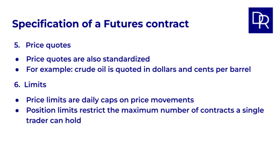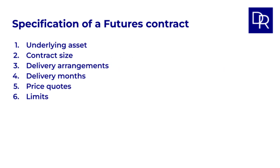Finally, exchanges often set price limits and position limits. Price limits are daily caps on price movements. If a price hits the limit, it's 'limit up' or 'limit down,' potentially causing temporary trading halts. These are meant to curb extreme volatility, though their value is debated. Position limits restrict the maximum number of contracts a single trader can hold to prevent market manipulation. These standardized specifications are what make futures contracts work effectively for hedging, speculation, and price discovery.